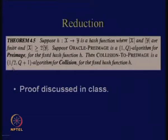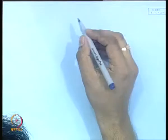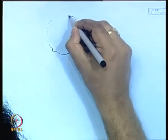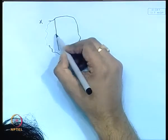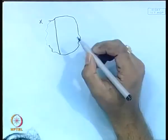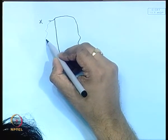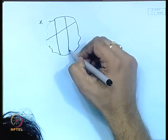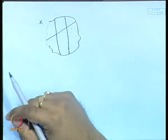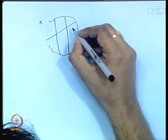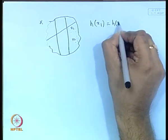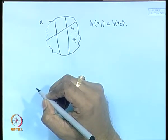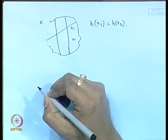In order to understand that, let us consider a proof. We start partitioning the input space. We can induce partitions by equivalence relations. We start partitioning this set such that all the values which lie in one partition have the same hash value. That means if there are two values like x₁ and x₂ in one partition, then h(x₁) and h(x₂) are the same. That is the definition of partition in this case.